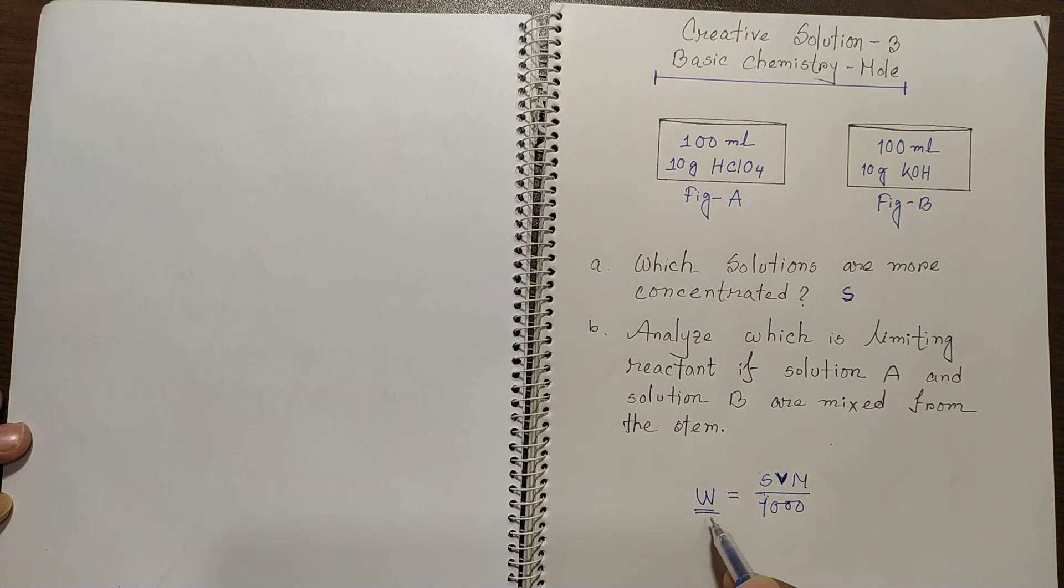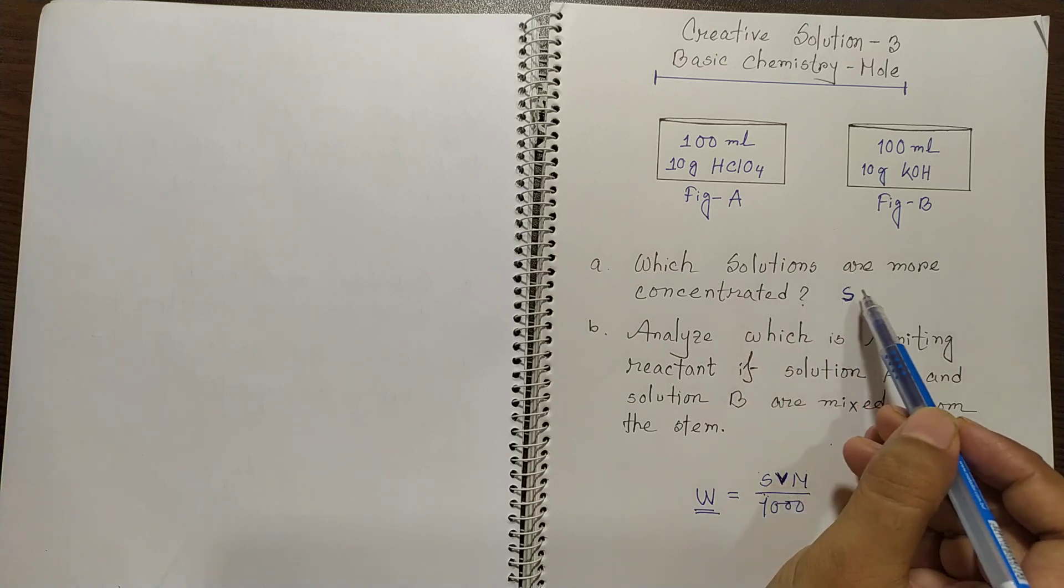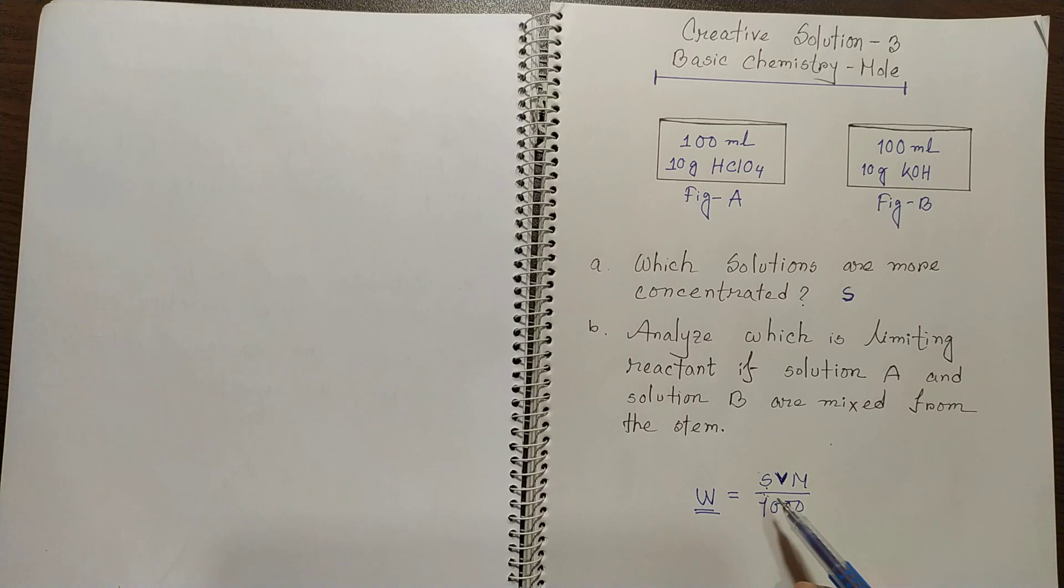So this W means the mass of the solute, S is the molarity, V is the volume and M is the molecular mass of the solute. So we can find which solute is more concentrated from the value of S.